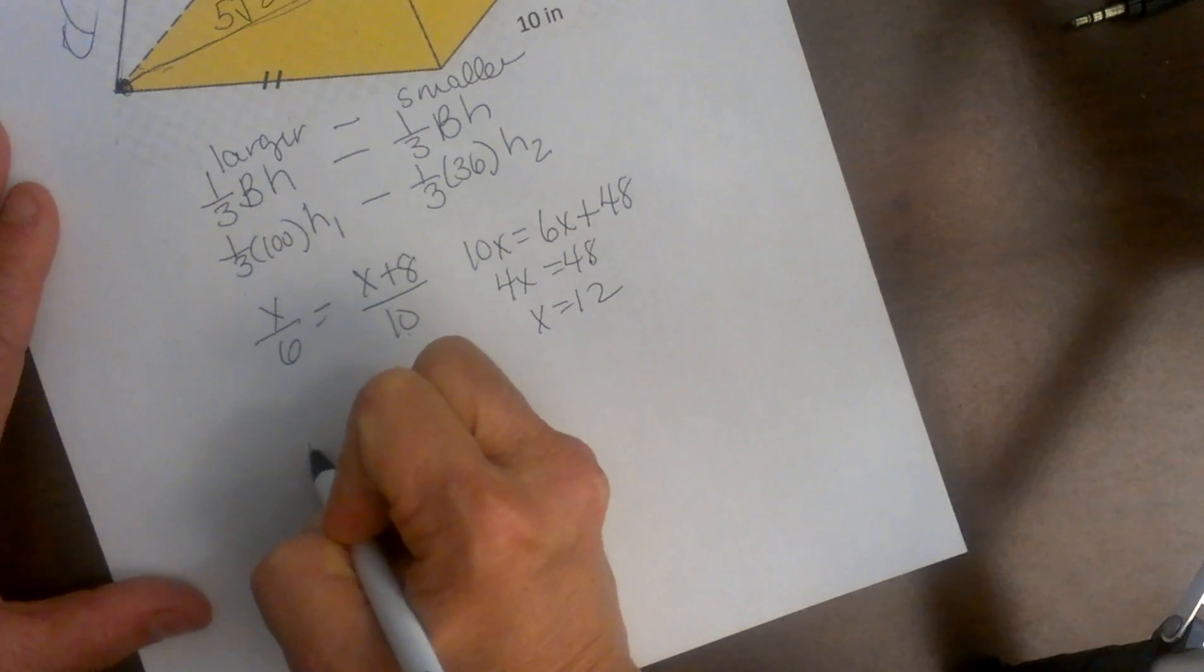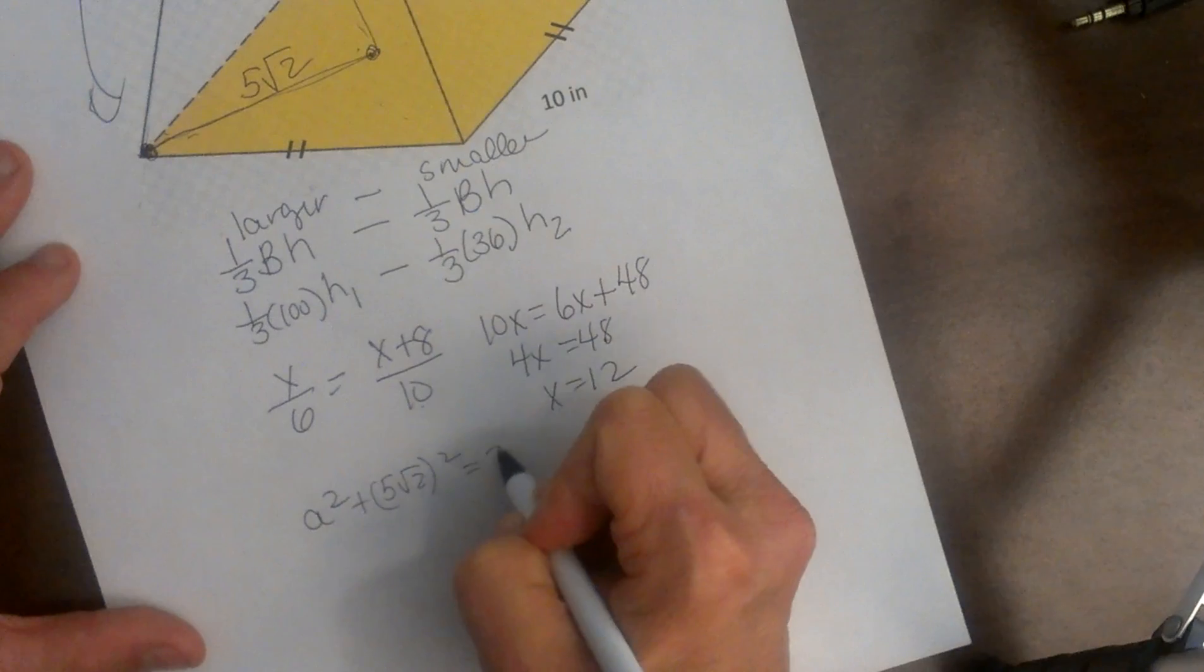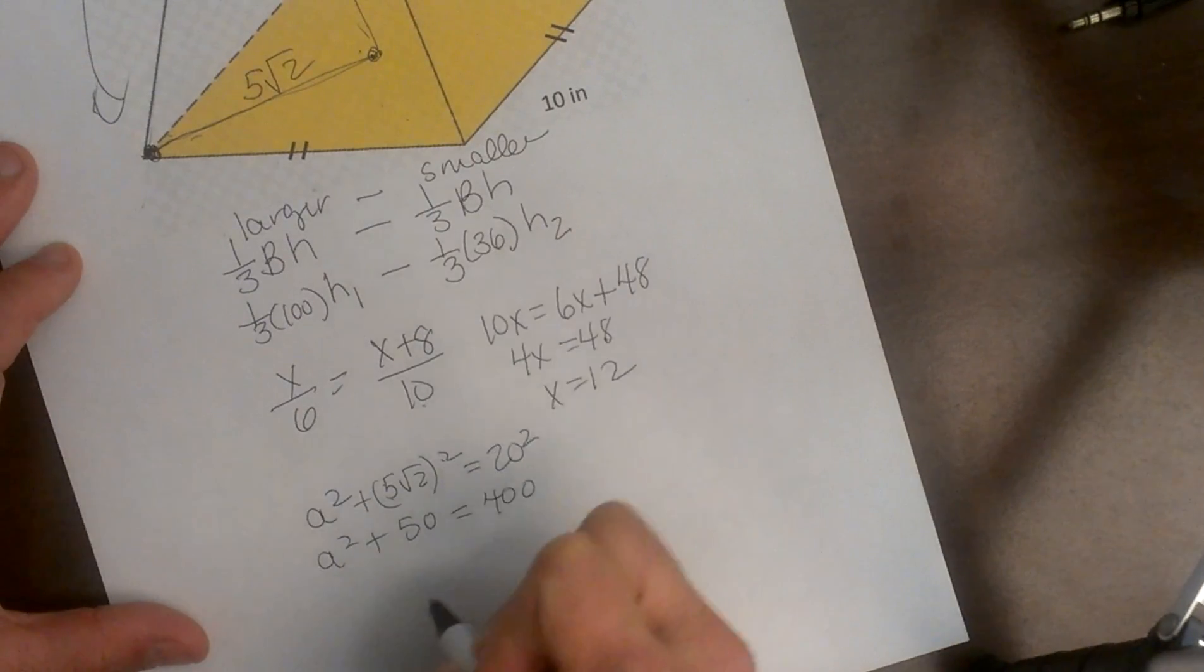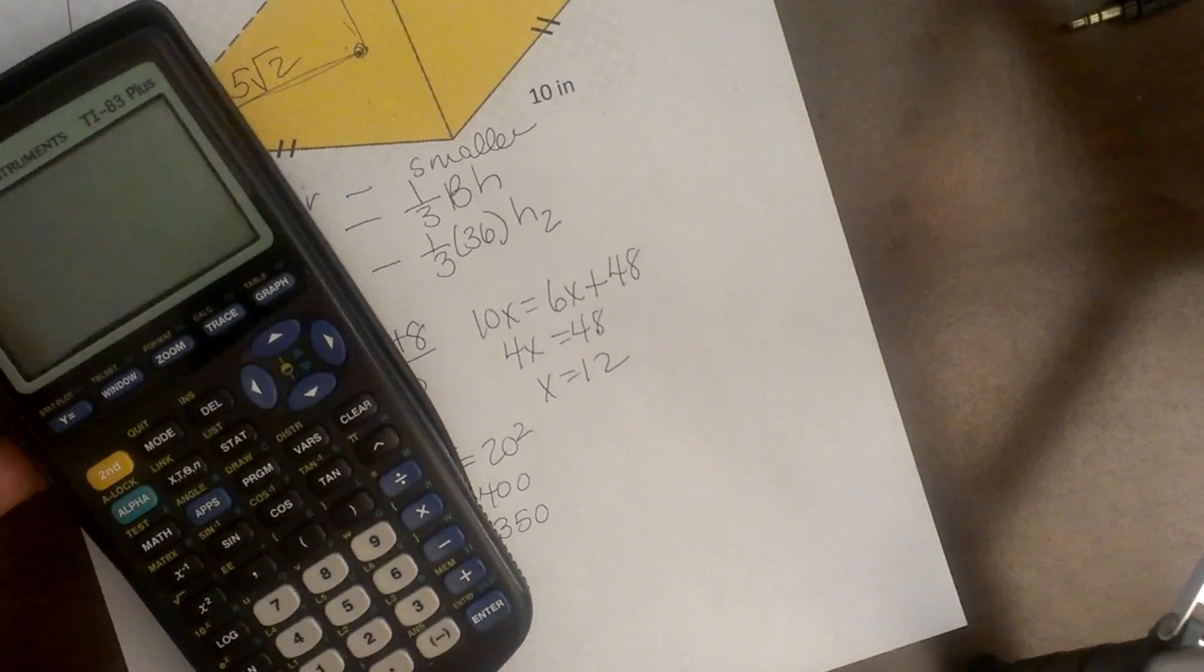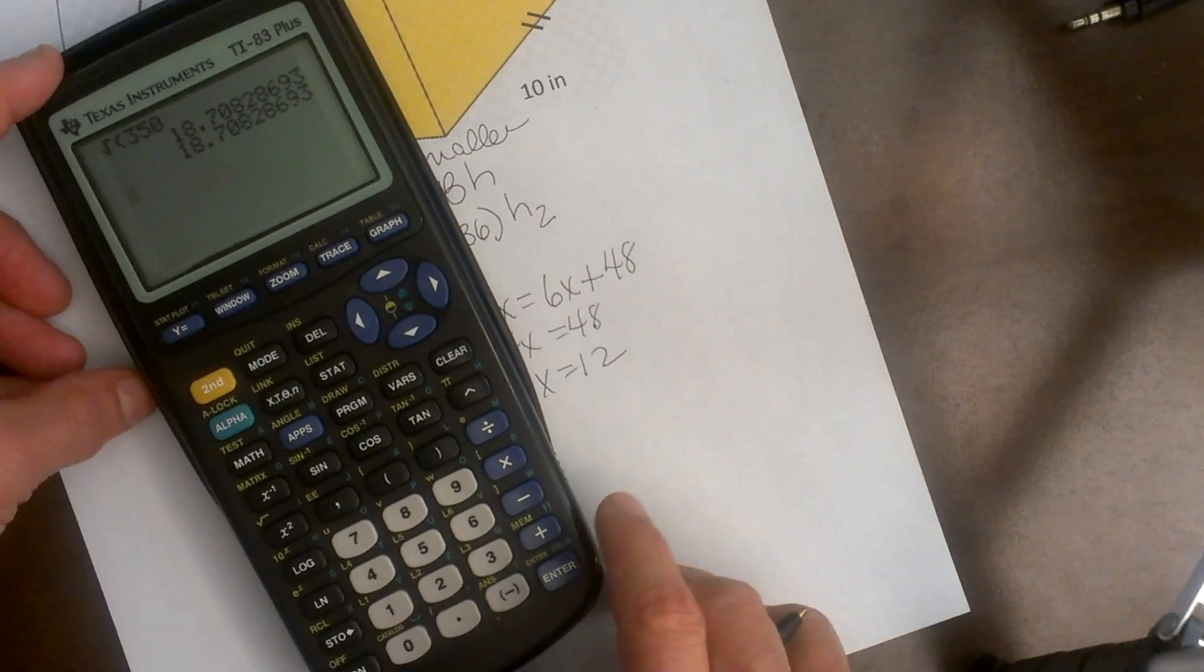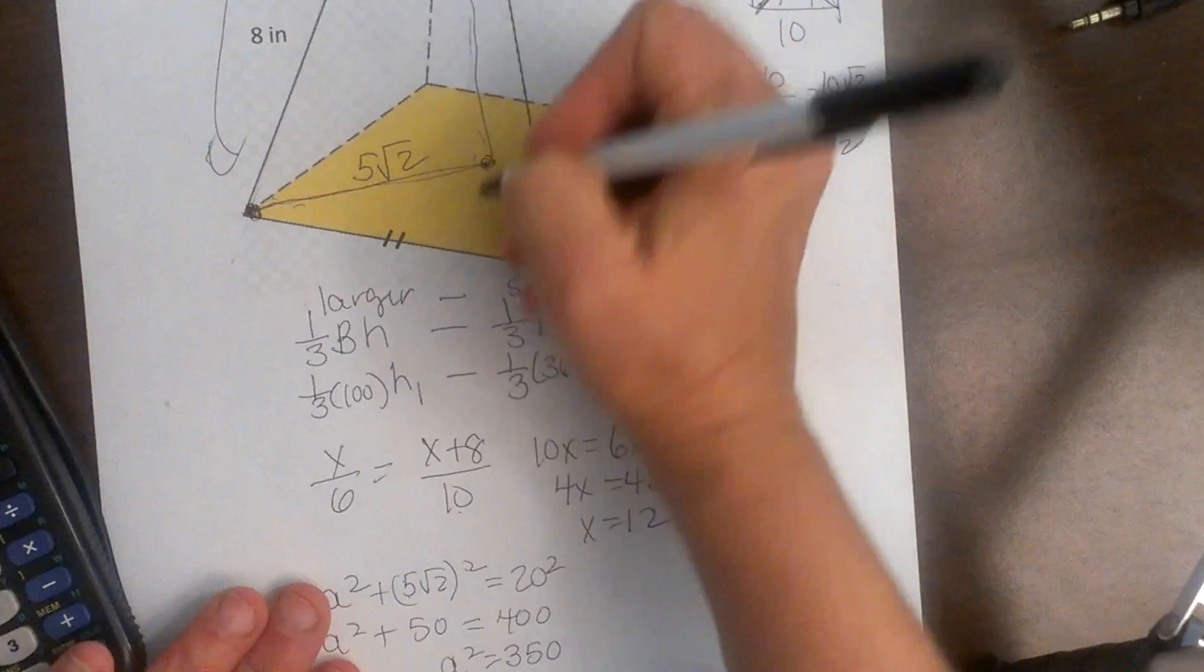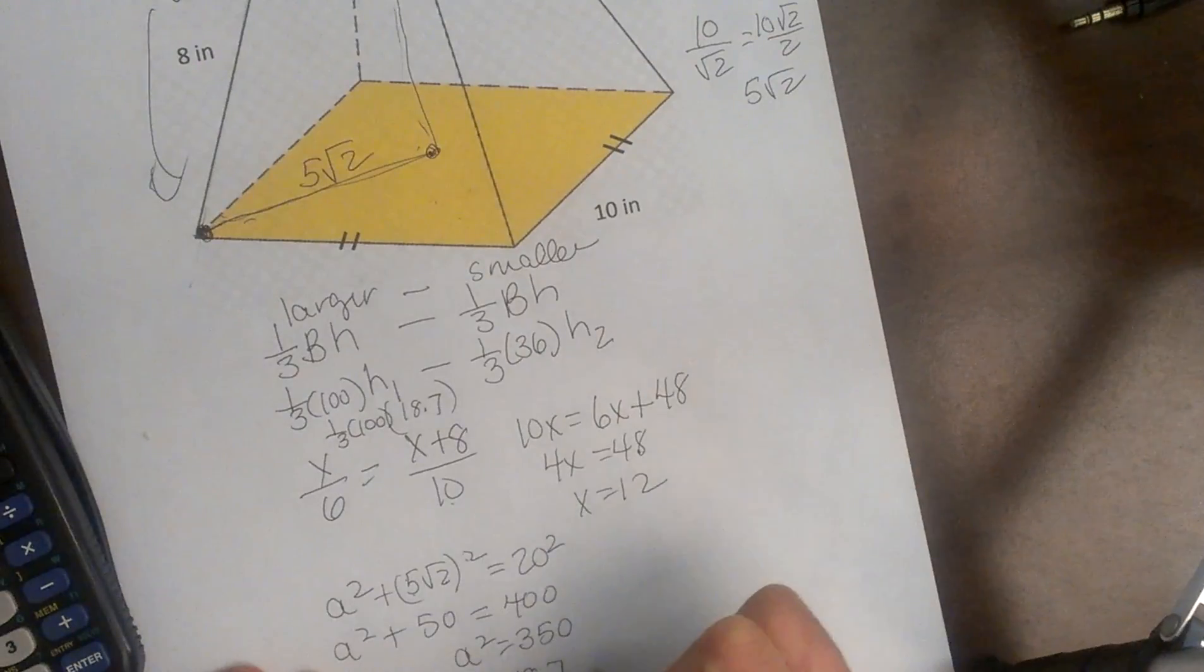So let's go down and use the Pythagorean theorem. A squared which is my height plus 5 square root 2 squared which is one of my legs is equal to 20 squared. So that's a squared plus 5 root 2 squared is 25 times 2 so 50 is equal to 400 so a squared is equal to 350 and then I can take the square root of that. So let's go over here and take the square root of 350 and that gives me 18.7 so a is 18.7 and that is my full height. So I can now plug it into my formula for the full height. 1 third of 100 times 18.7 that is the big height.